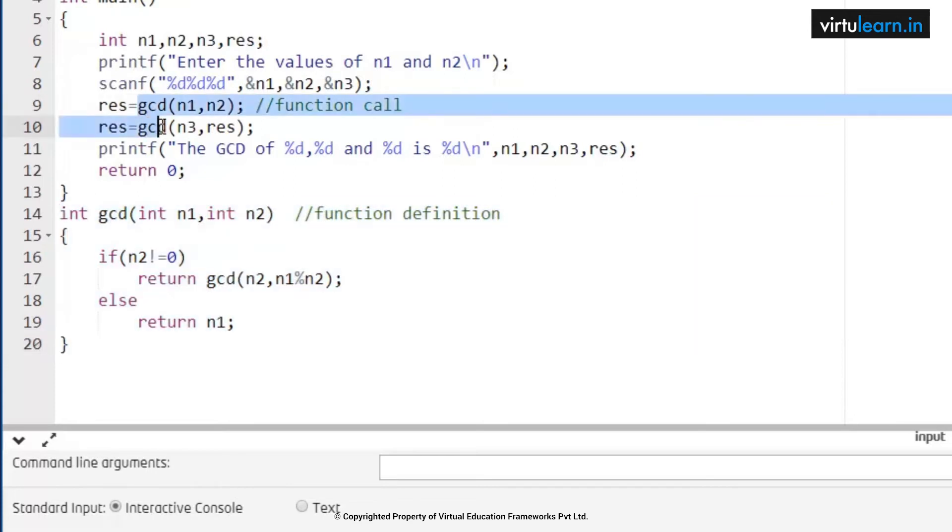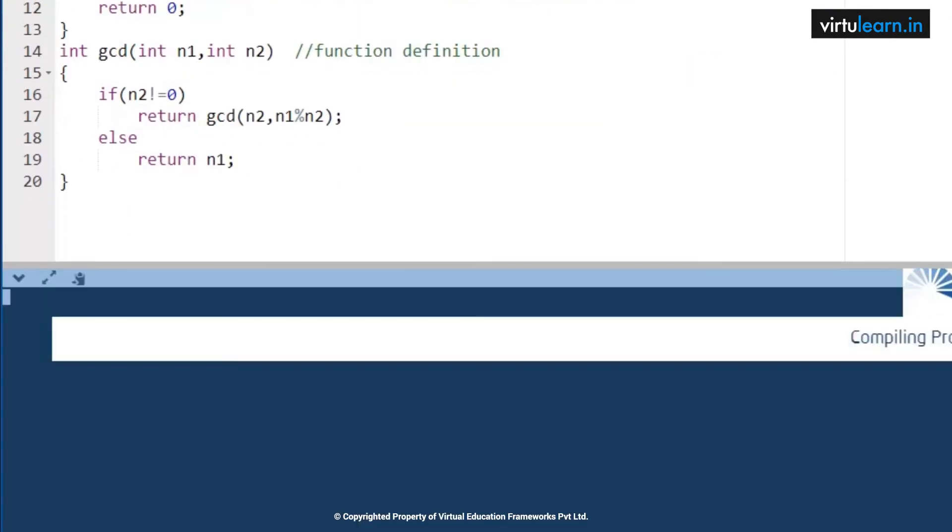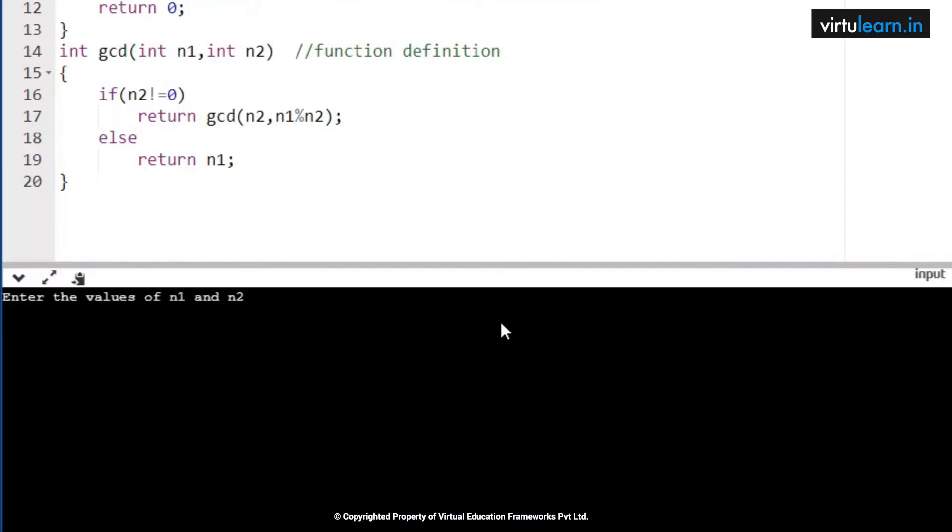So here I am calling the function two times. The first function call will be for finding the GCD of two numbers. Whatever result we got, we are storing it in a result variable. Next, the n3 number comma result, we are going to pass again to the GCD so that we can get the GCD of three numbers.